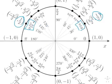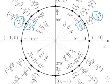And where is the sine equal to -1? The sine is equal to -1 down here, at 3π/2.